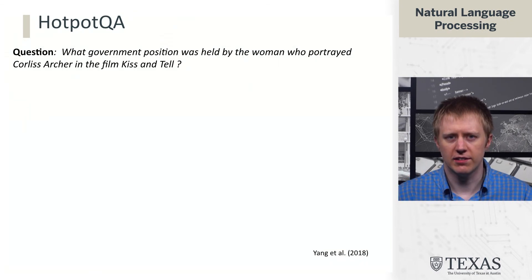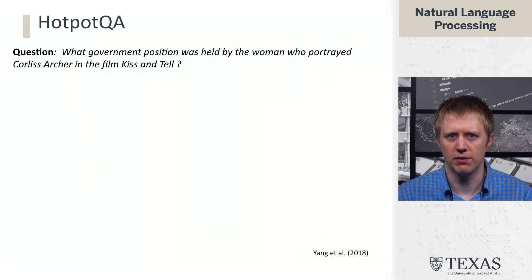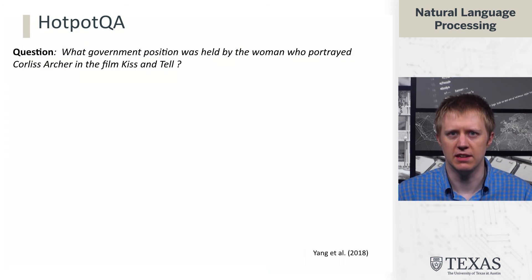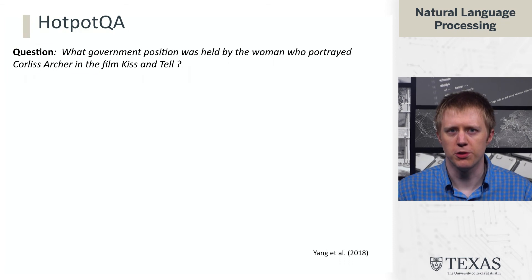Another example is a dataset called HotPot QA, where the questions are in natural language and are quite a bit more sophisticated. For example: what government position was held by the woman who played Corliss Archer in the film Kiss and Tell? This question, unlike 'when did Marie Curie win the Nobel Prize,' has structure that indicates we need to do multiple steps of reasoning.